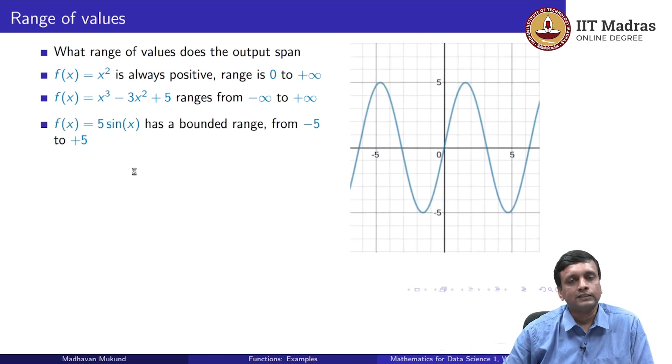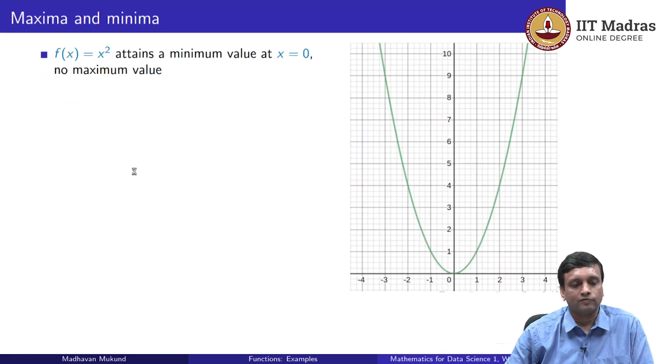And then there are some functions like the trigonometric function sin(x), which oscillate between an upper bound and lower bound. So if we take sin(x), usually it is between +1 and -1. If we take 5 × sin(x), then it will be between -5 and +5. So this has a bounded range. Even though we consider all possible inputs, we never go outside this range from -5 to +5.